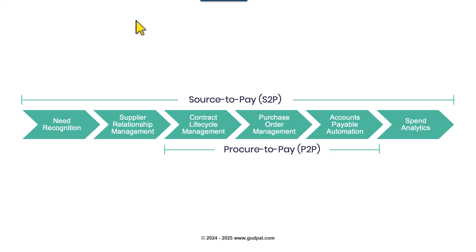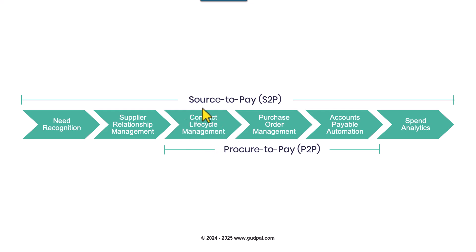Once a supplier is identified, the next step is contract lifecycle management. This is where the contract will be negotiated with the supplier — the terms and conditions for a specific contract will be negotiated with the buying organization and then the contract will be signed. This also includes supplier solicitation such as a request for quotation, auctions, suppliers' responses in the form of quotation or bidding, and then the analysis and awarding process which will result in a contract.